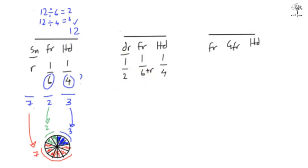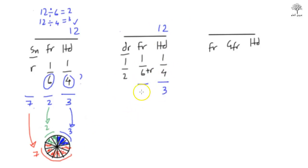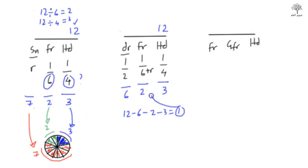We can use the same number as before — 12 — because 4 goes into 12, 6 goes into 12, and 2 goes into 12. So: 12 divided by 4 equals 3 for the husband, 12 divided by 6 equals 2 for the father, and 12 divided by 2 equals 6 for the daughter. The remainder: 12 minus 6 minus 2 minus 3 equals 1, which goes to the father.